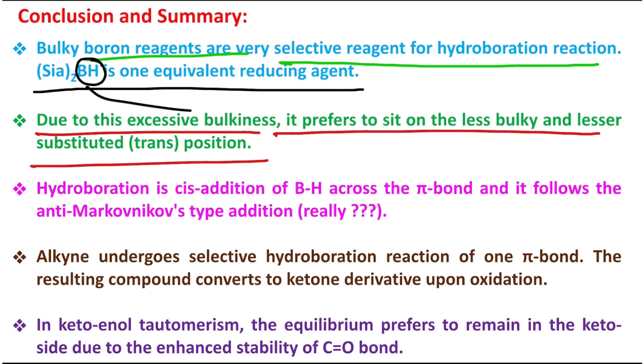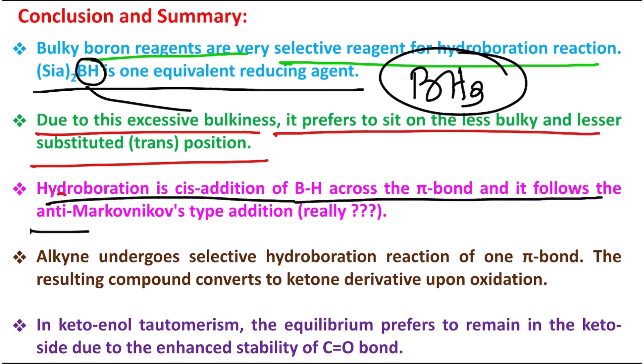By the way, it has one BH. If you take BH3, it has three BH, so three substitutions are possible. Third point: this hydroboration is actually cis addition of BH across the pi bond and it follows the anti-Markovnikov type addition, although if you consider HBr versus HB polarity, you will understand it's following that rule.